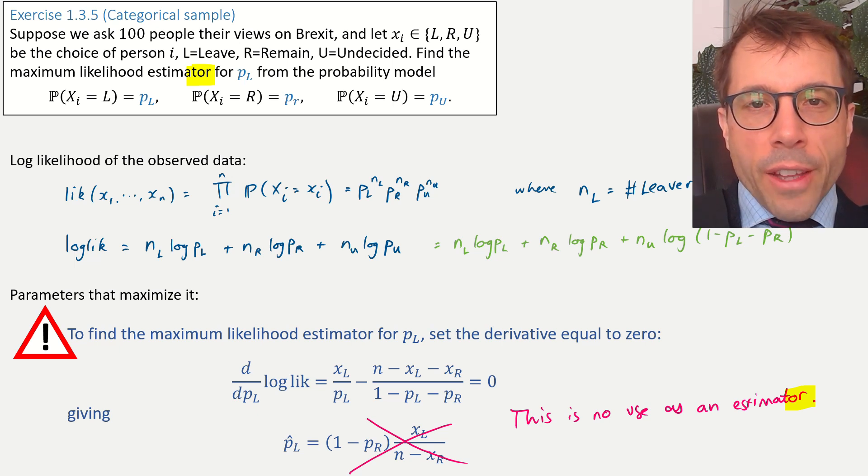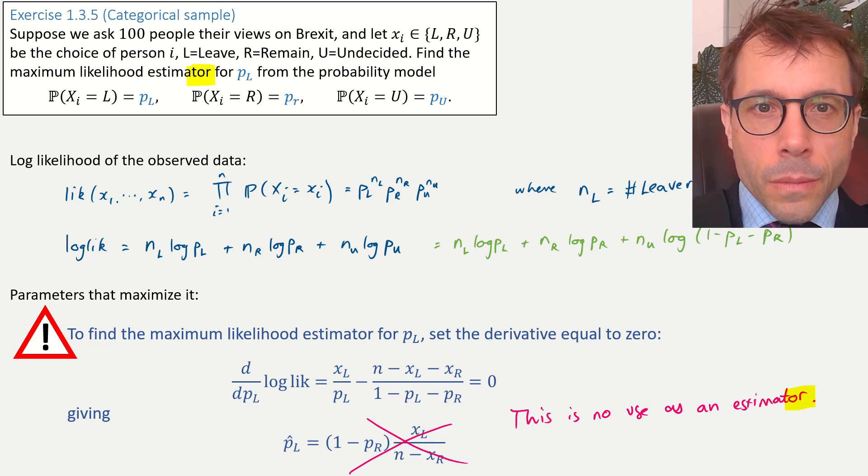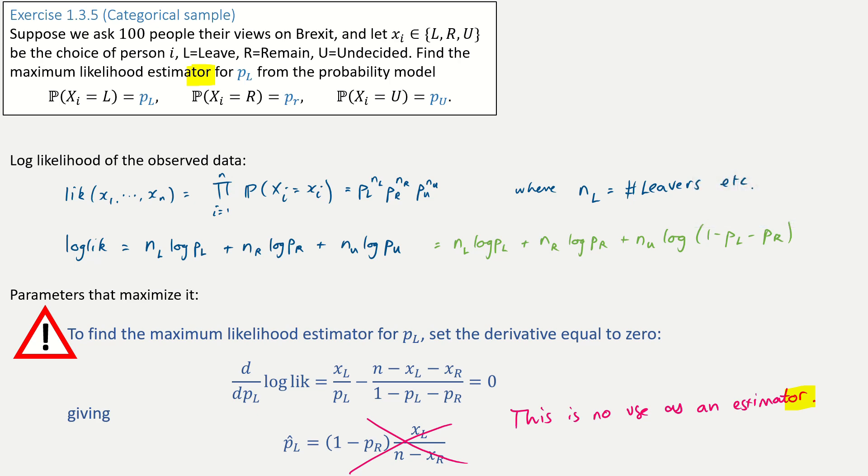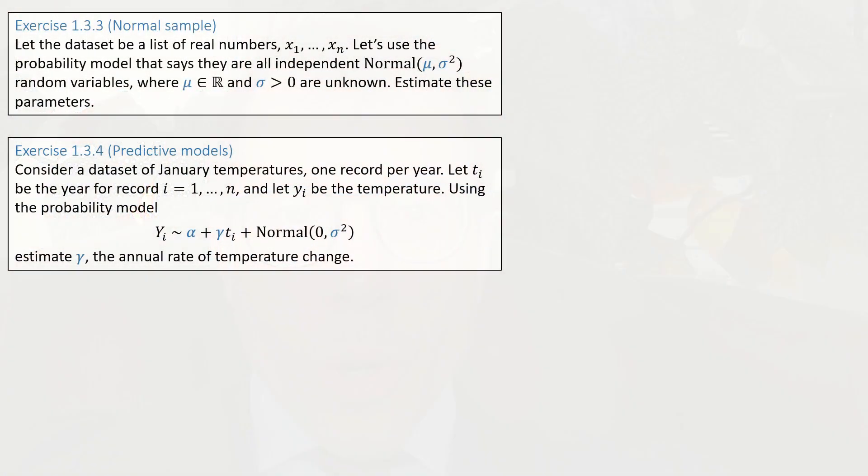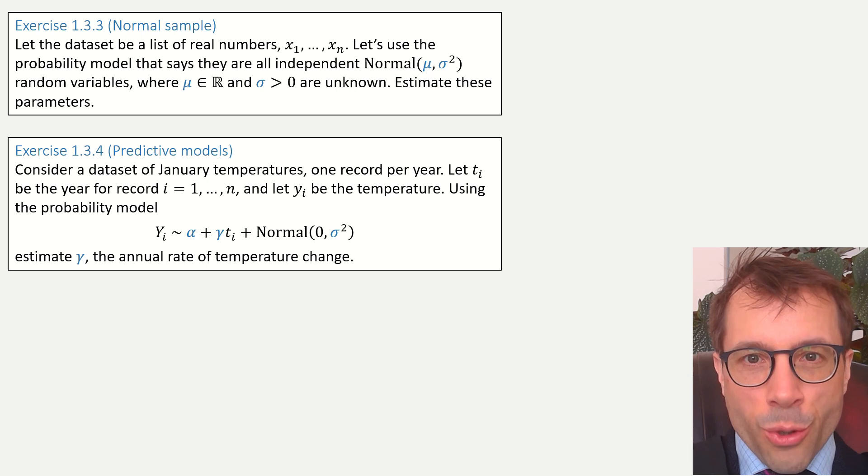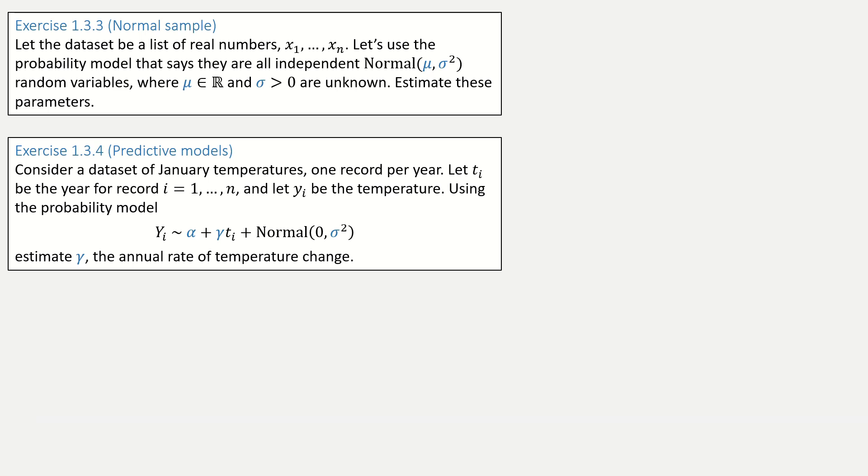This is an easy trap to fall into, so you should always do a quick sanity check and make sure that any estimates you get are legitimate estimators. So, that's all there is to maximum likelihood estimation. Here are two more examples for you to try. I won't work through them in this video, not because they're unimportant. In fact, they're probably the two most important examples in this whole course, which is why I want you to work them out. Pause the video and see if you can solve them. Here are the answers. And if you want to see detailed calculations, please look in the printed lecture notes.